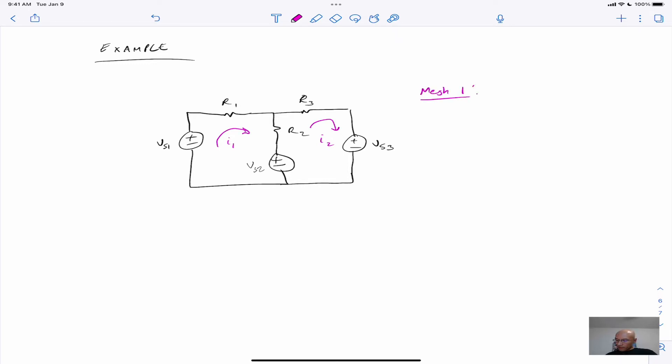So for mesh one, we have the following KVL equation. Okay, remember that what I'm doing here is I'm adding up voltage drops as I go around the loop. So we have a negative VS1 as we follow the mesh current I1, and then a positive VS2 as we follow the mesh current. So it's a positive VS2 drop.